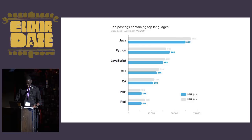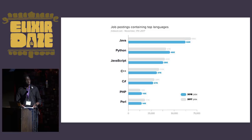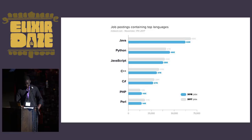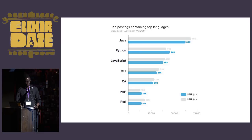Even more alarmingly, if we define success as the availability of jobs, we come to the conclusion that functional programming languages have failed. As you can see here, in the last two years, functional languages do not offer the same number of jobs as even Perl or the often-lauded language PHP. So how can I in good conscience tell bootcamp students who come to my meetup every week that they should go study functional languages?